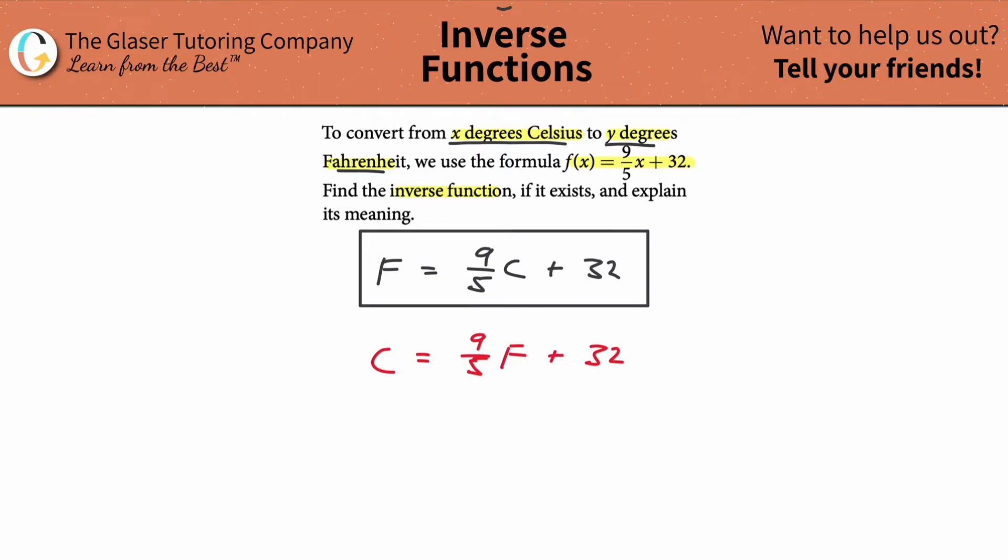What I'm going to do is I have to find the F value, meaning in order to compare this original function to this new inverse function, I want to get them to look very similar. In other words, if this one is solved for F already, then I want to solve this for F. I don't want it to be solved for C. So how do we solve this for F?